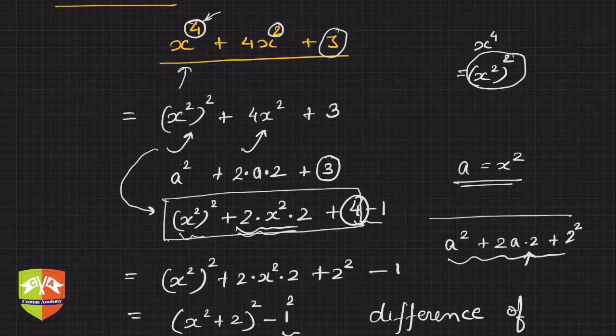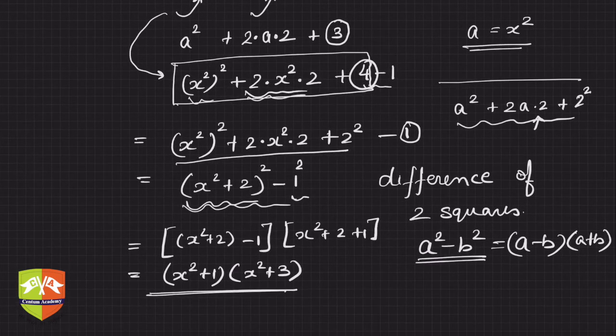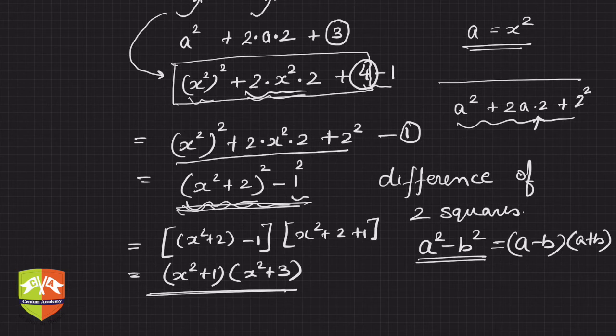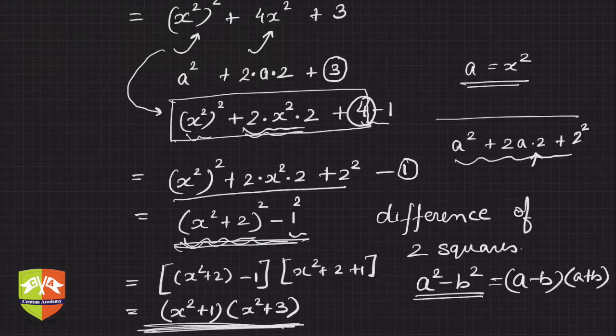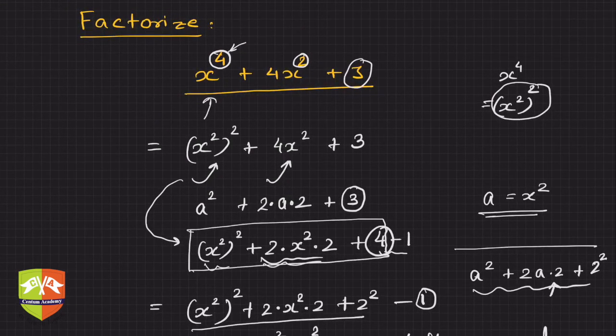We completed the square, we got a full perfect square, and we somehow wanted to reduce it to difference of two squares, which we fortunately got. And the moment we got difference of two squares, we know how to factor that. This is the learning of this problem. Keep that in mind and try more such sums to make it more clear.